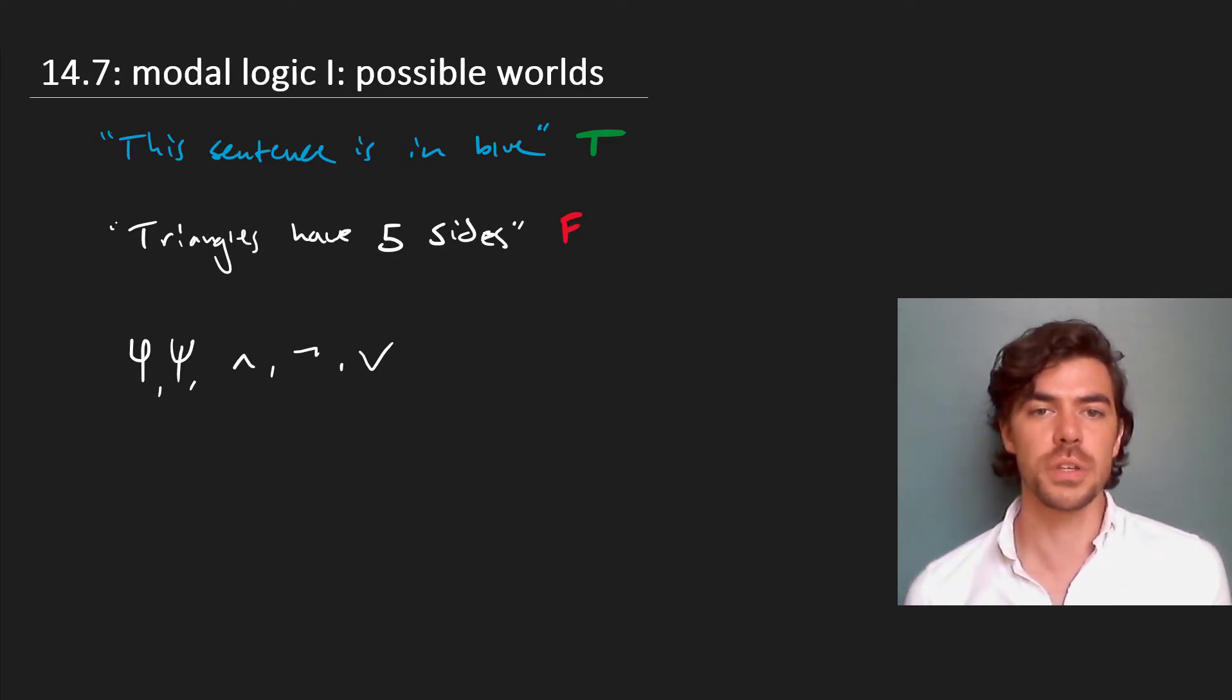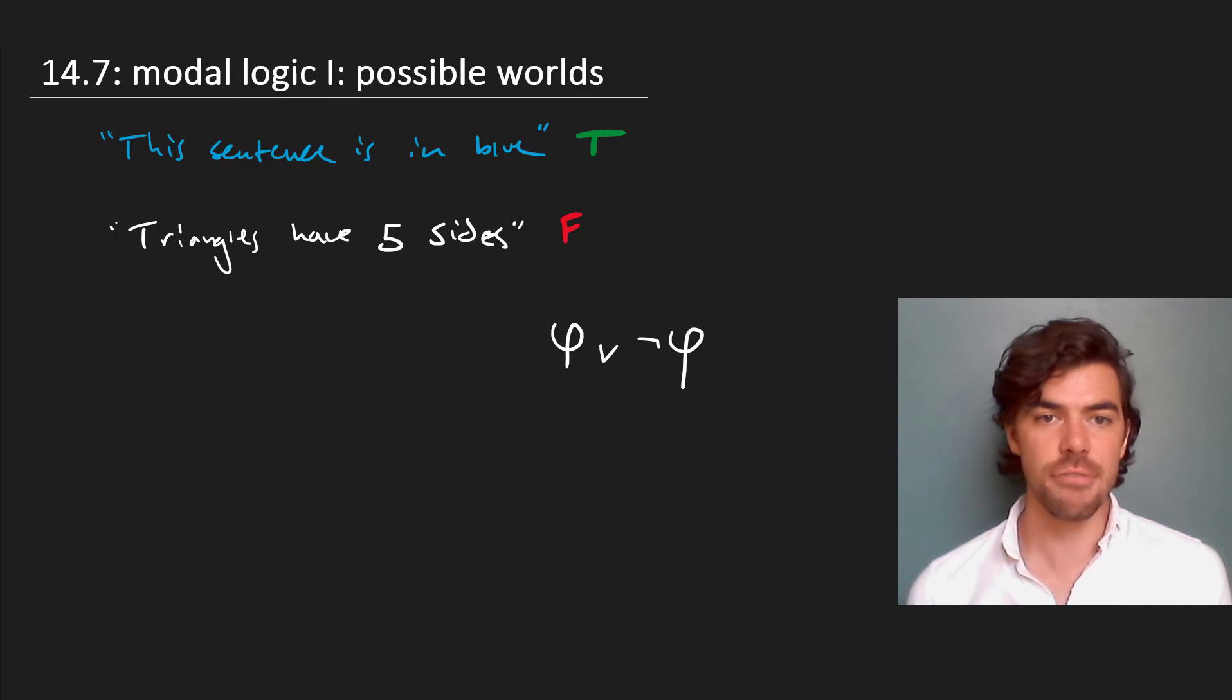For example, take a sentence that will always come out true, phi or not phi. That'll always be true on account of its form. So we can say every world makes this true. We'll quantify not across objects in the domain, but worlds.